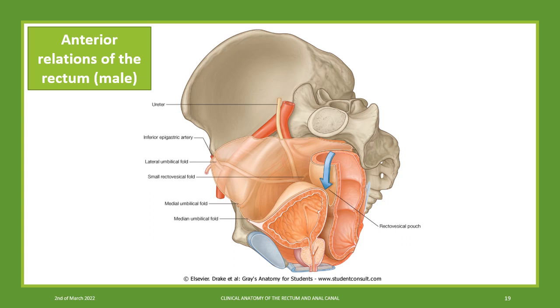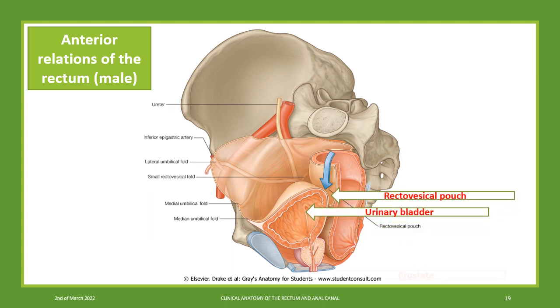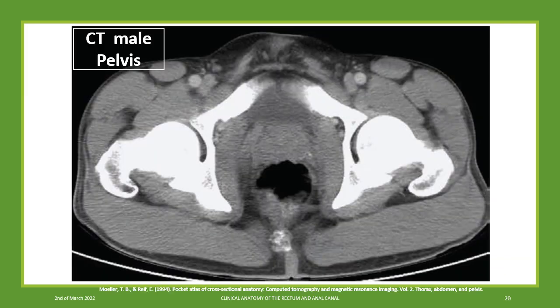The anterior relations of the male rectum are the recto-vesical pouch, urinary bladder, and prostate. In this coronal section, we can see the same structures — anteriorly and posteriorly — the prostate and the rectum.